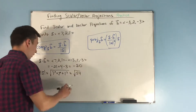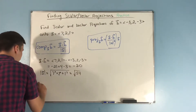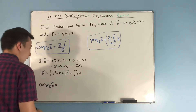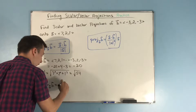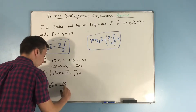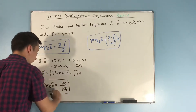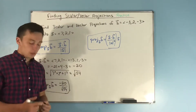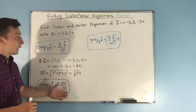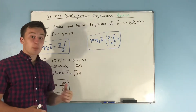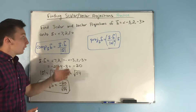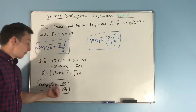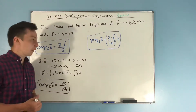So now we know that the component of B onto A is negative 20 over √54. This component is negative — what does that mean? It means that the projection of B onto A is pointing in the opposite direction of vector A itself. That's why the magnitude of the component is negative.